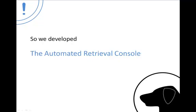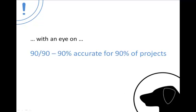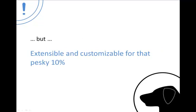So we developed the Automated Retrieval Console, also known as ARC, a generalized tool with the target of being 90% accurate for 90% of the projects, a 90-90 vision, and for those who live in that pesky 10%, a tool that can be extended and customized for specific needs.